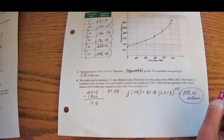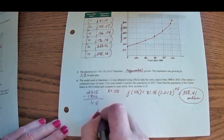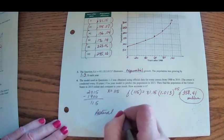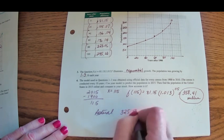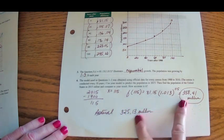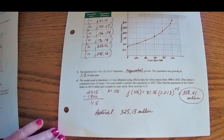All right, so when we looked it up online, the actual population of the U.S. in 2015 was 325.13 million. All right, so that's off by 25 million. That's off by quite a bit. Our model is not really precise.